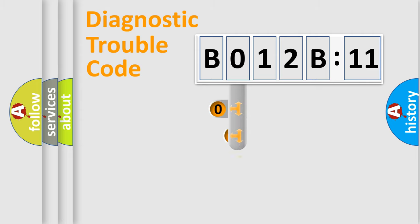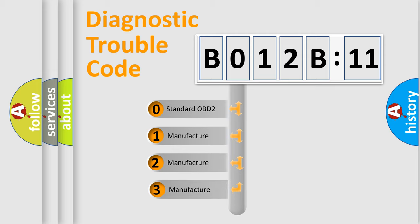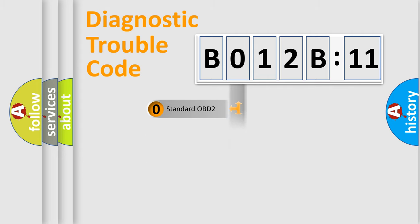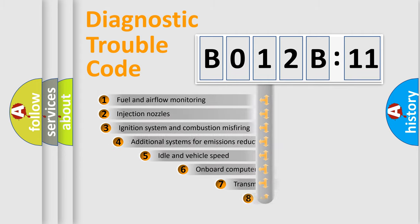This distribution is defined in the first character of the code. If the second character is expressed as zero, it is a standardized error. In the case of numbers 1, 2, or 3, it is a more specific expression of the car-specific error.